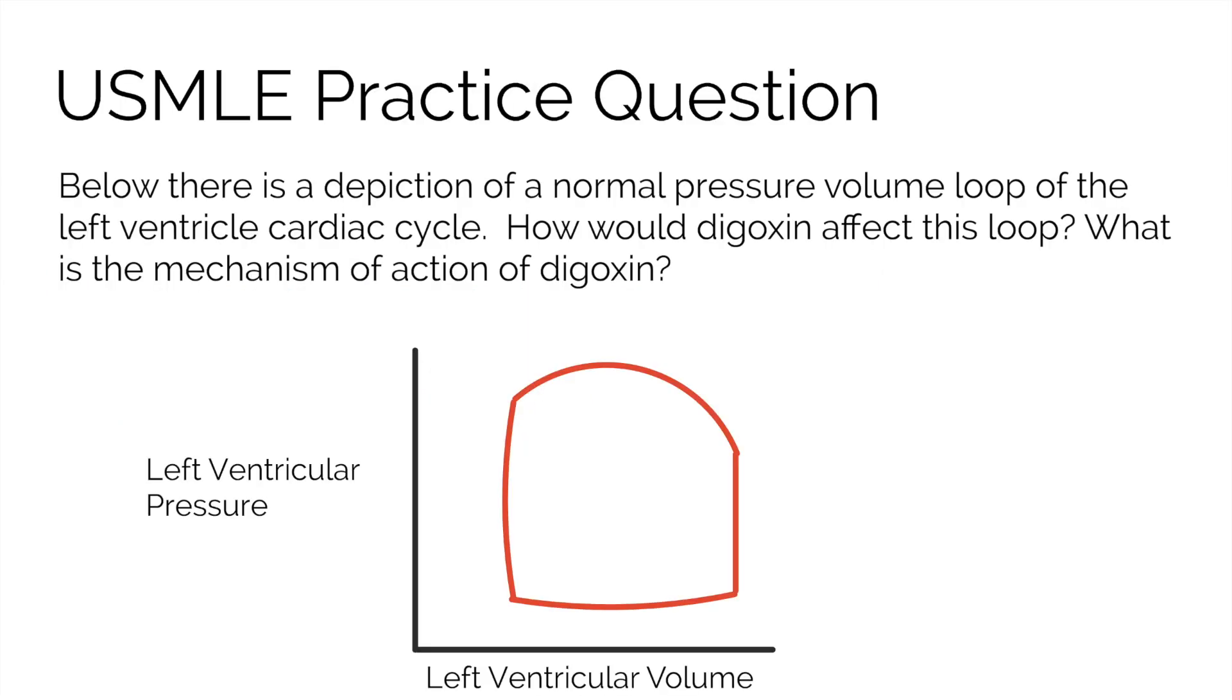Let's get to our eighth question in this video series. Below, there is a depiction of a normal pressure-volume loop of the left ventricular cardiac cycle. How would digoxin affect this loop? What is the mechanism of action of digoxin? Take some time and think it over. Pause here while you figure out the answer.